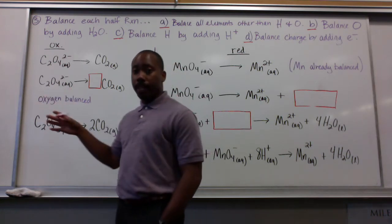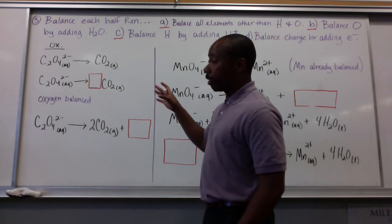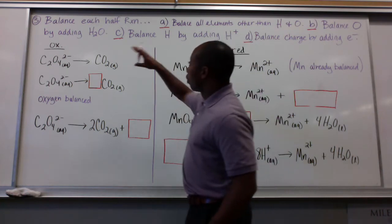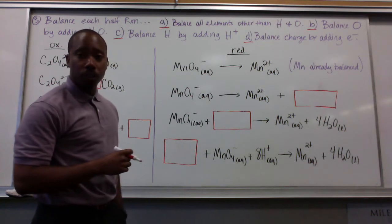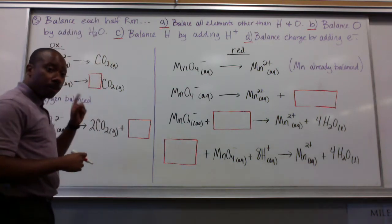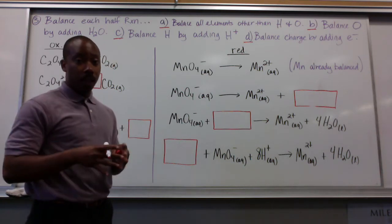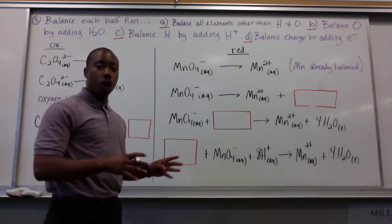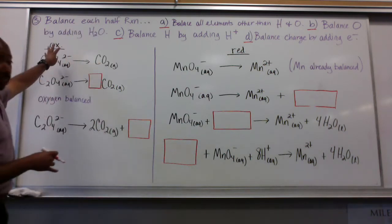We can take these half reactions and carry on to actually balancing them now. Step 3 here outlines 4 different steps in balancing a redox reaction. First, A, balance all elements other than hydrogen and oxygen. B, balance oxygens by adding H2O. C, balance hydrogens by adding H+. And D, balance charge by adding electrons.